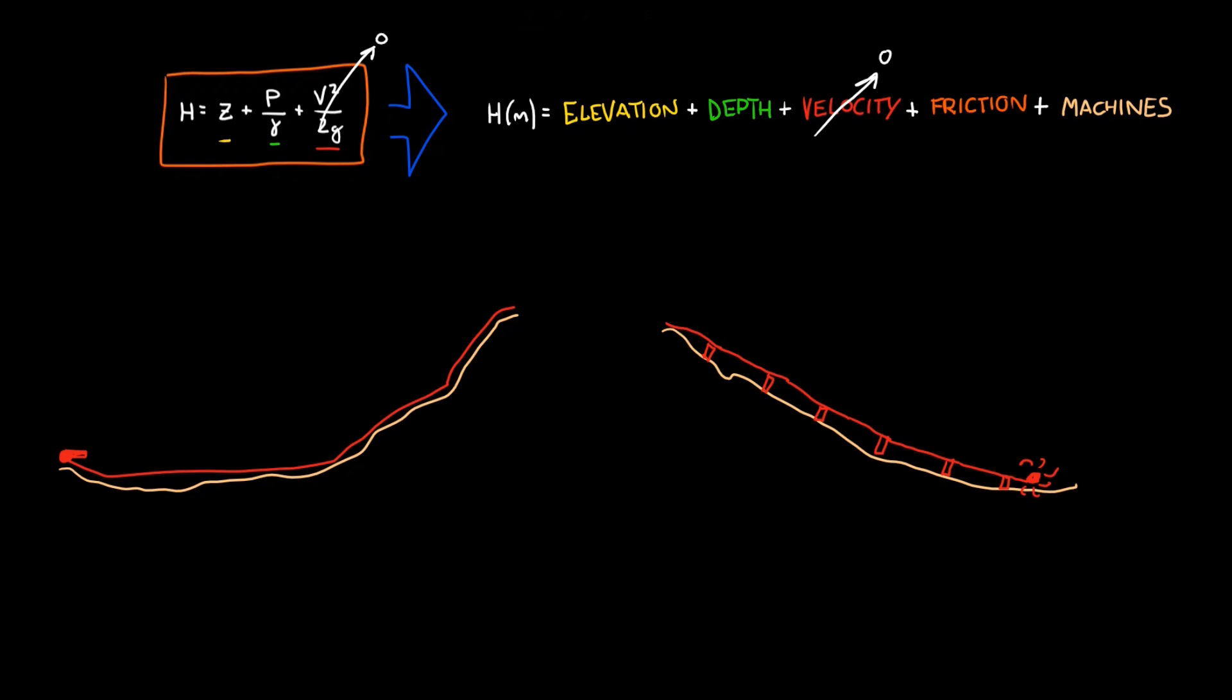Pumps consume energy to add pressure to water, and turbines do the opposite, capture the energy in water and pass it on to a grid. These are the resulting hydraulic gradient lines.